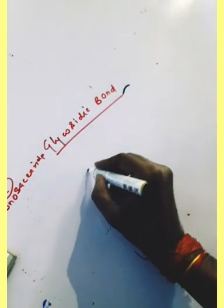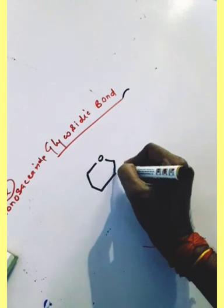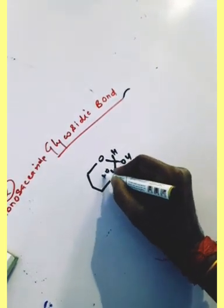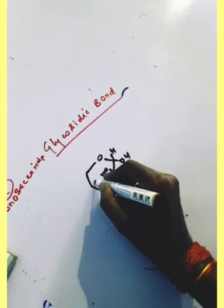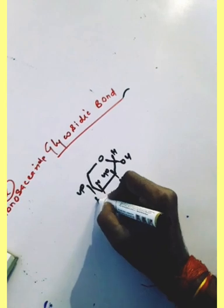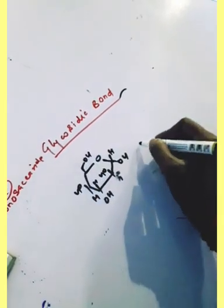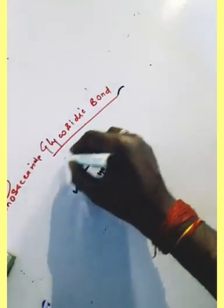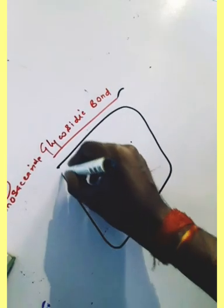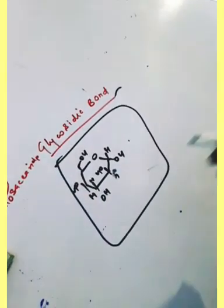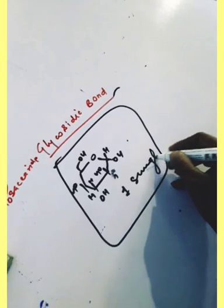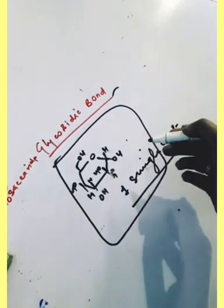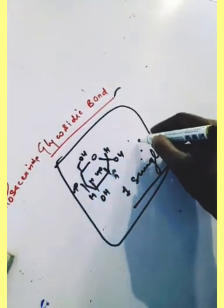The glycosidic bond is not present in monosaccharides. If you take one monosaccharide like glucose, there is no glycosidic bond, because the glycosidic bond is present only in carbohydrates that are polymeric — monosaccharides are a single unit, so in monosaccharides the glycosidic bond is not present.